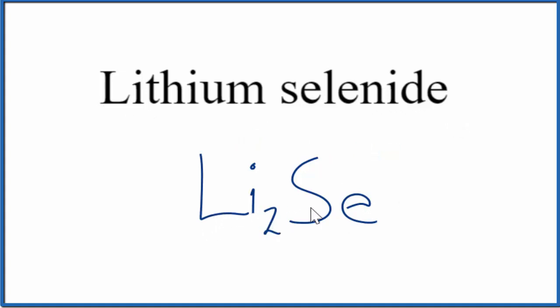If you're given the formula Li2Se and asked to write the name, you know that you have lithium, Li. That's just lithium and Se. That's your selenide there. You change the selenium to selenide and that would be the name for Li2Se.